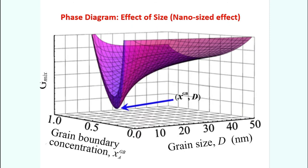Grain boundary area is pretty large and forms a significant part of the surface energy or interfacial energy of the system. Hence, we have to consider grain boundaries as a separate phase. At the end of the last lecture I described equations — by Weissmüller and others — which can be used to calculate the free energy of the whole system consisting of grains and grain boundaries.